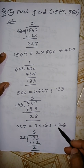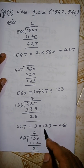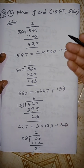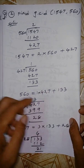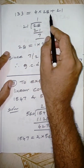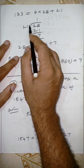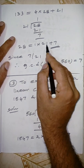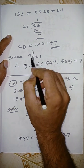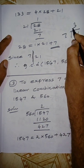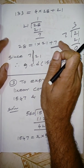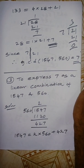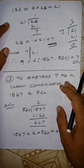Then divide 133 by 28: 4×28 = 112, remainder 21, so 133 = 4×28 + 21. Next divide 28 by 21: 1×21 = 21, remainder 7, so 28 = 1×21 + 7. Then divide 21 by 7: 7 divides 21 exactly with remainder 0, so we stop. The final non-zero remainder is 7, therefore GCD(1547, 560) = 7.